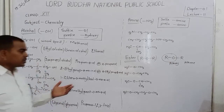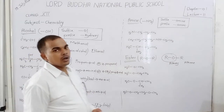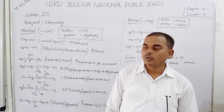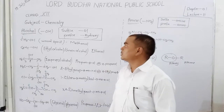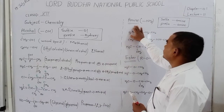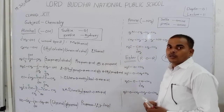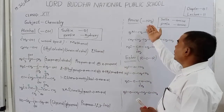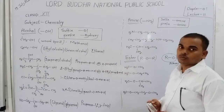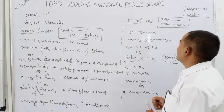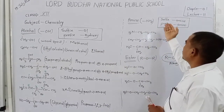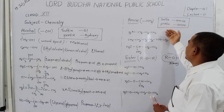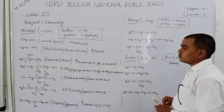I think you understand about the alcoholic group. Now let us discuss amines. The representation of amines is NH2. The suffix of amines is '-amine', but the prefix of amines is 'amino'.